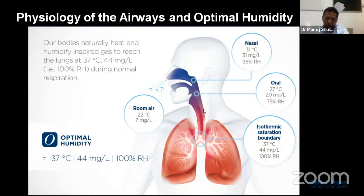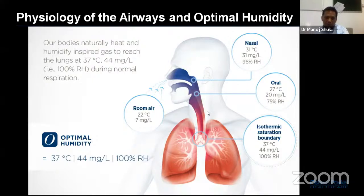When it reaches the trachea below the carina, the isothermic saturation boundary is reached. At 37 degrees centigrade, the relative humidity is around 100%, which is approximately 44 mg per litre.